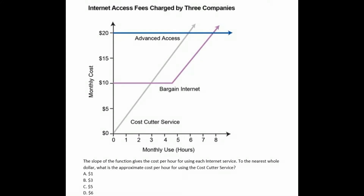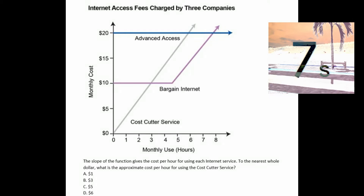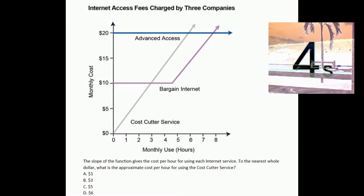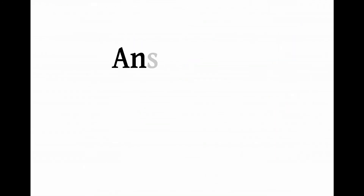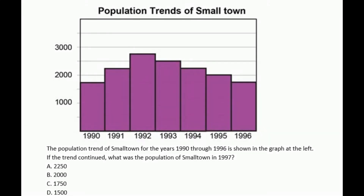Next: internet access fees charged by three companies — monthly cost on the vertical axis and monthly use in hours on the horizontal axis. The slope of the function gives the cost per hour for using its internet service. To the nearest whole dollar, what is the approximate cost per hour for using the Cost Cutter service? Is it A: $1, B: $3, C: $5, or D: $6? The answer is letter B, $3.